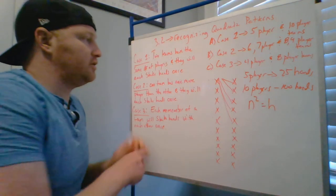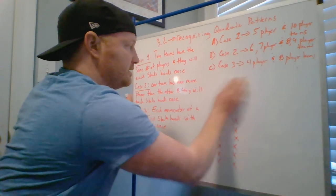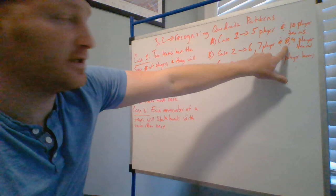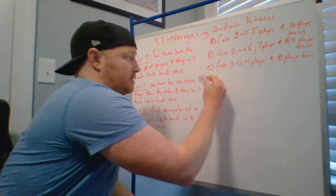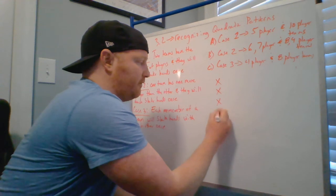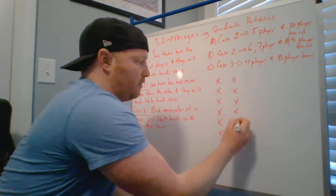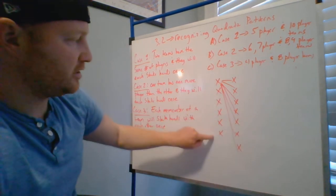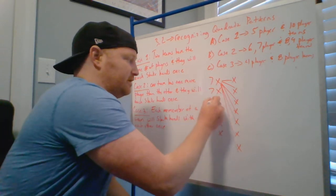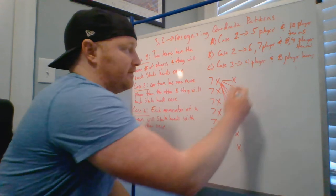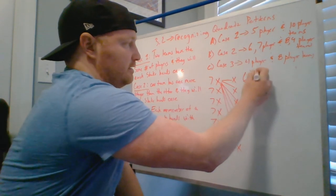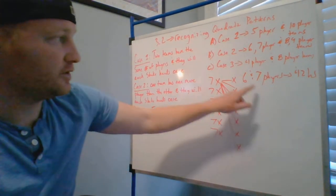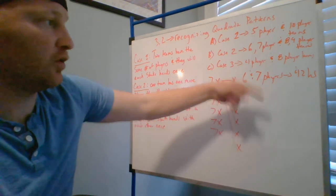Now let's do Case 2. One team has one more player than the other — for example, a six-player team versus a seven-player team. Drawing it out helps: every person on the six-player team shakes a total of seven hands, so seven times six gives 42 handshakes total. So with a six- and seven-player team we get 42 handshakes.